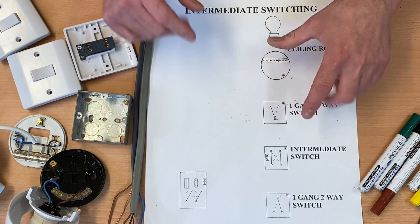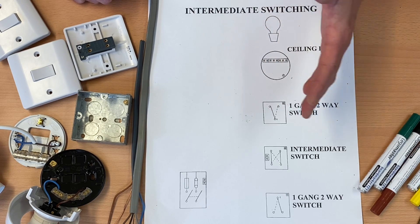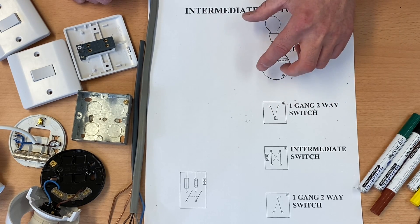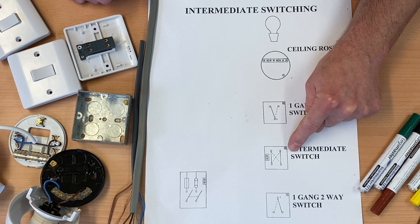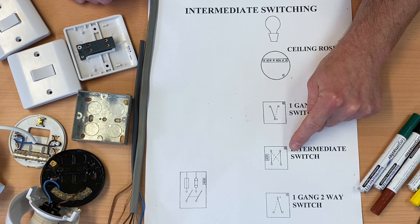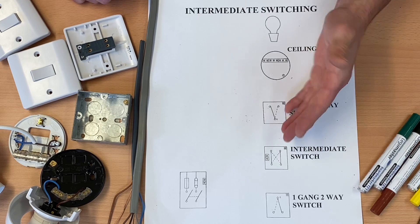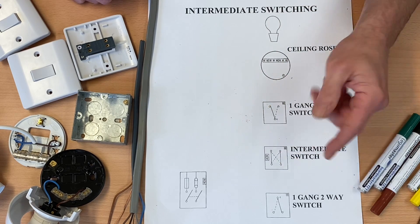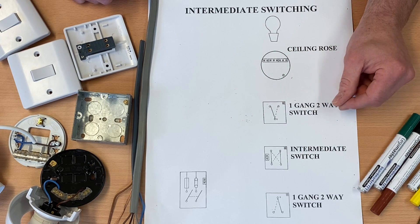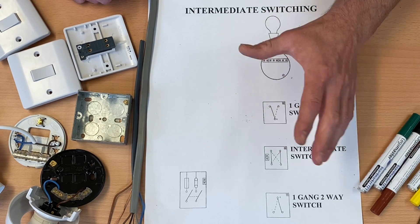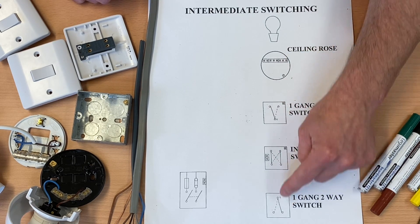Continuing on with our wiring diagrams, we're at the stage now where we're doing the intermediate switching. This is where we've got three or more switches controlling the lighting point. As long as you have a two-way switch at each end, the switch in the middle is the intermediate switch. You can have as many intermediate switches as you like. A key question in multi-choice exams: how many intermediate switches can you have? An unlimited number, as long as each end has a two-way switch.